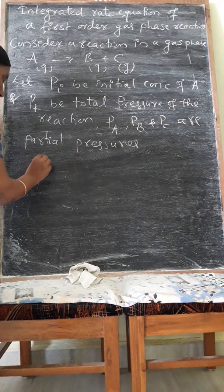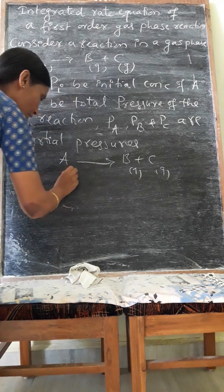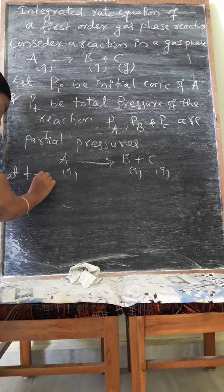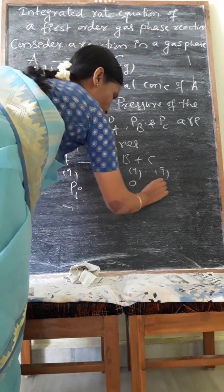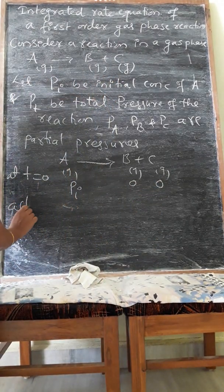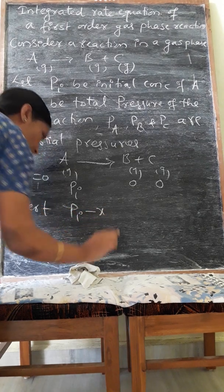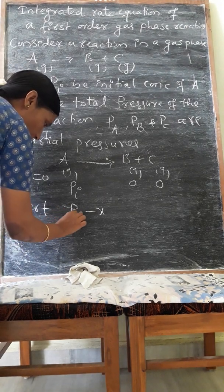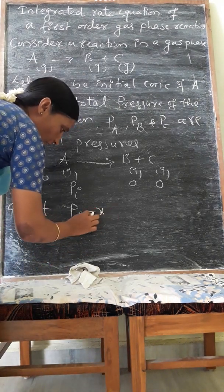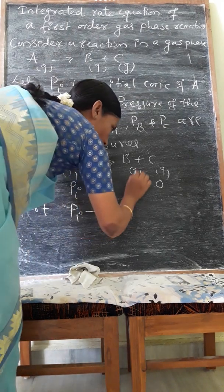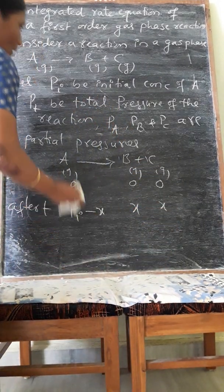For the reaction A giving B plus C in the gas phase, at time T equal to 0, the initial concentration is PI and there is no product formed. After time T, some concentration is used up — call it X. So the used-up amount is minus X, and B and C each have concentration X.